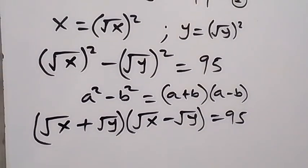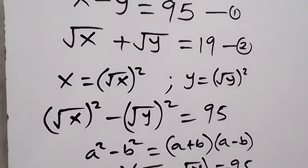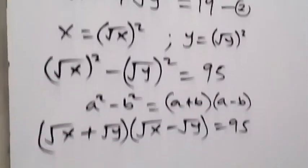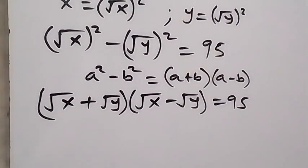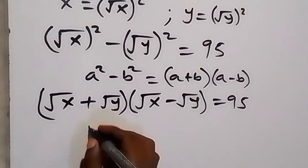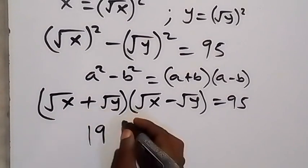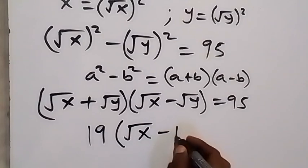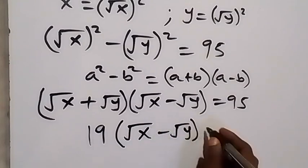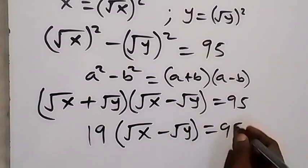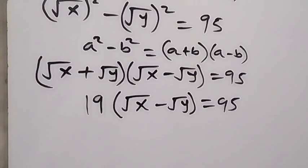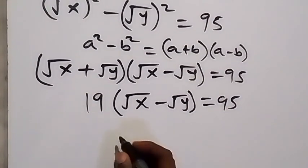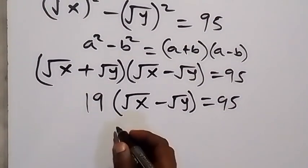From equation two we have root x plus root y equal to 19, so instead of writing root x plus root y we substitute 19, giving us 19 multiplied by (root x minus root y) equals 95.